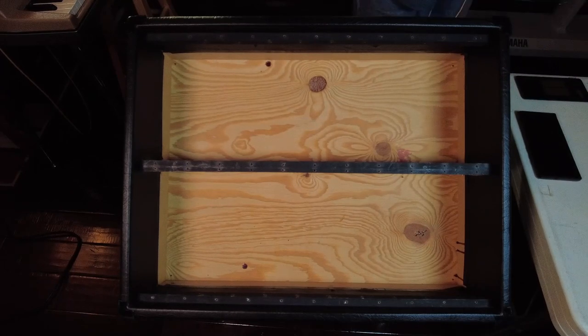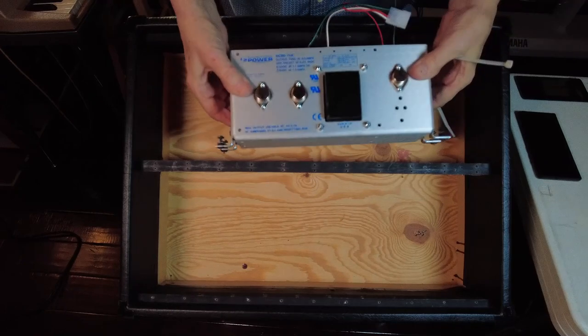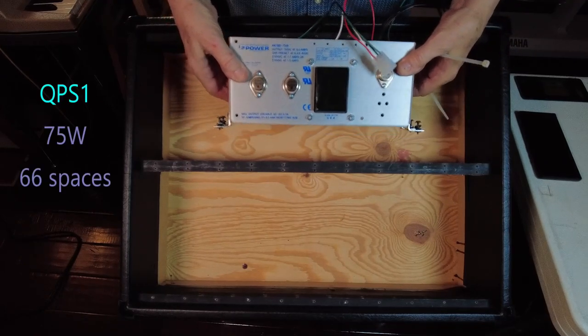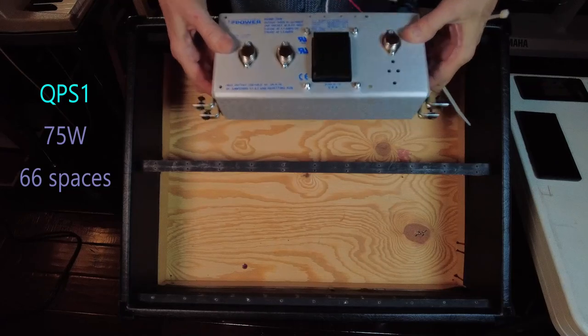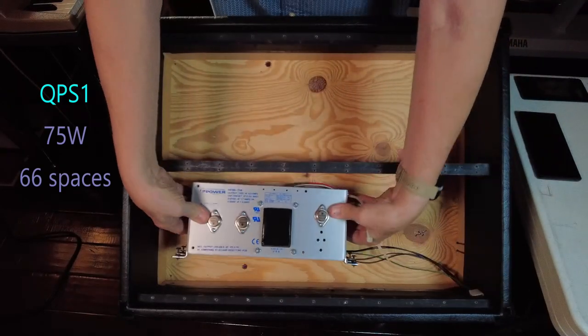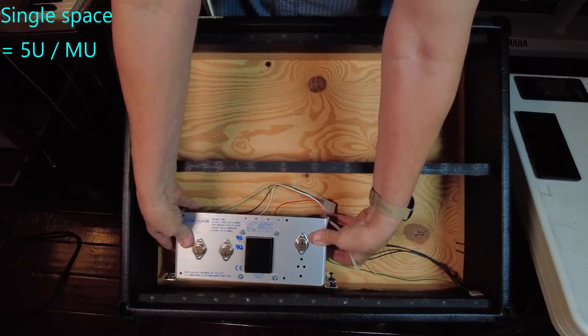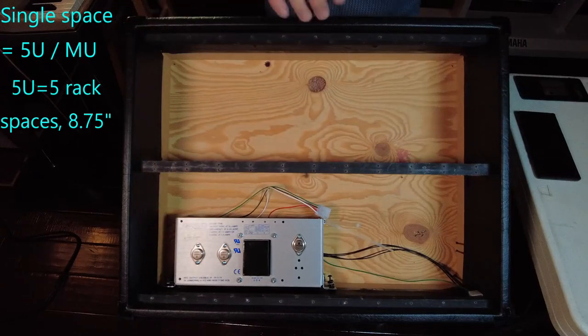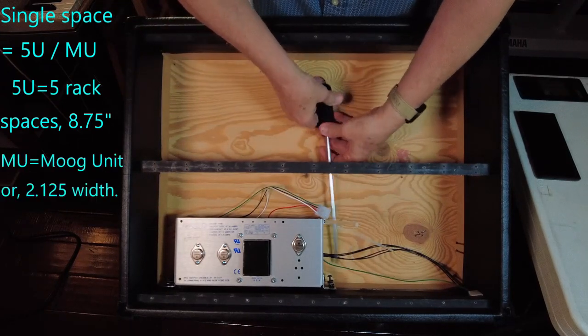As you know, we talked about the different kinds of power supplies. I'm going to put an internal power supply in this box. This power supply is capable of powering 66 modules, or 66 spaces. So basically, we're going to set it in here, like that. And we're going to screw it in.